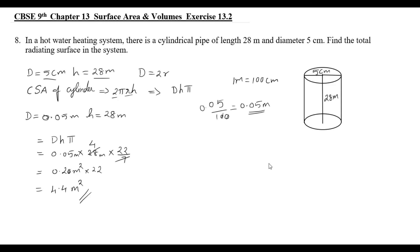Find the total radiating surface of the system. It is the total radiating surface. 4.4 meter square. This is the answer. Make it to sum.